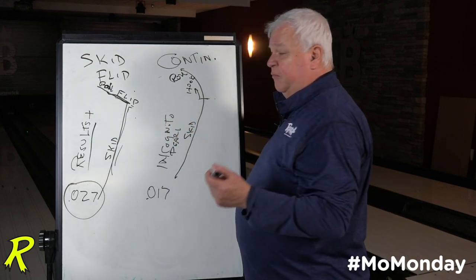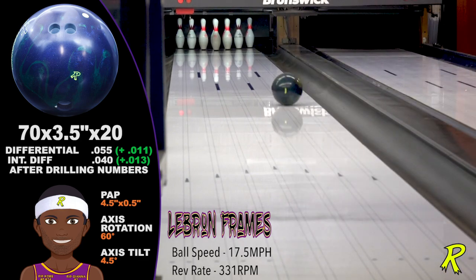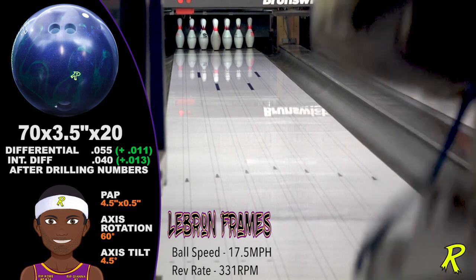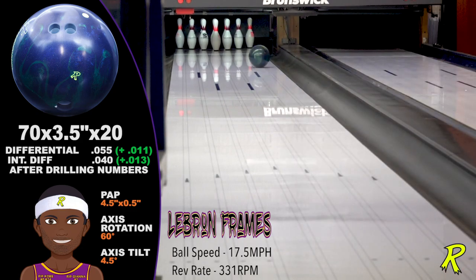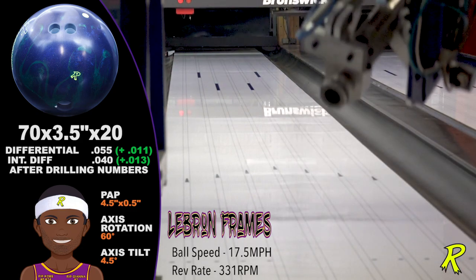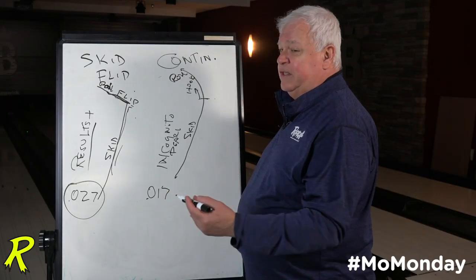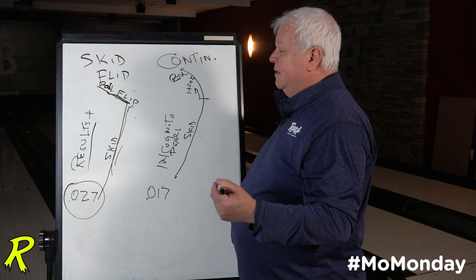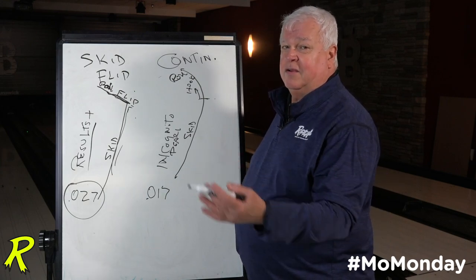With the skid flip, you have more energy down lane, a more violent reaction. It creates a greater angle of entry, and you strike more with a larger angle of entry in many cases. The downside is once you reach that point of no return where the flip and the roll are not beneficial for striking, you start leaving corner pins.